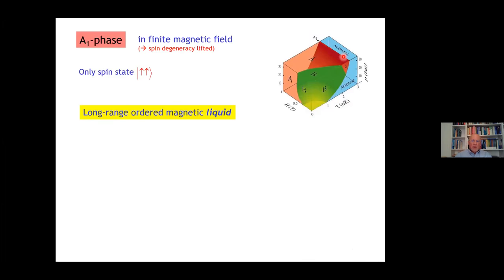The third phase, the A1 phase, is this sliver only stable in an external magnetic field, which lifts the spin degeneracy, and then only the up-up component is there. A1 phase is a liquid, but it's a magnetic liquid. It's a long-range ordered magnetic liquid.